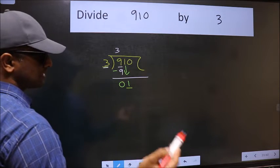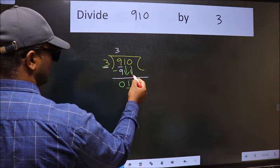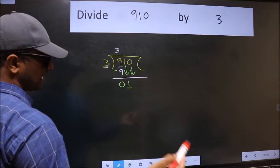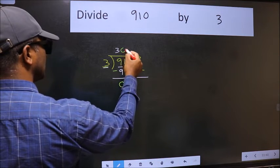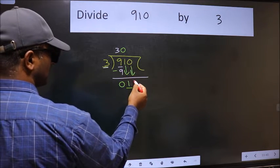So we should bring down the second number. And the rule to bring down the second number is we should put 0 here. Then only we can bring this number down.